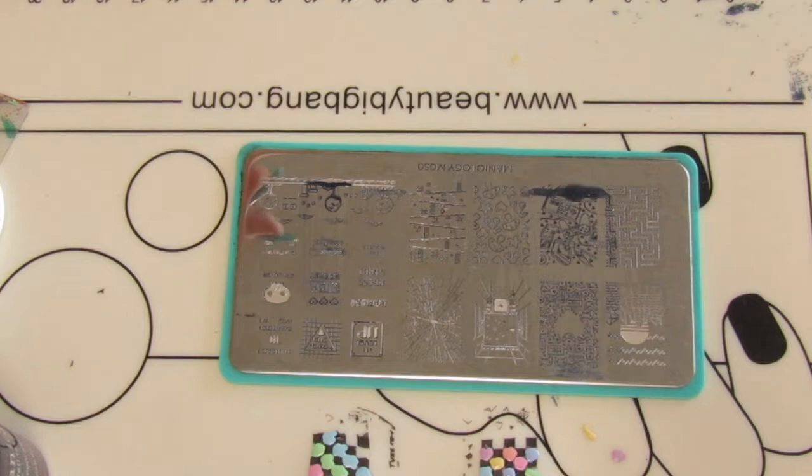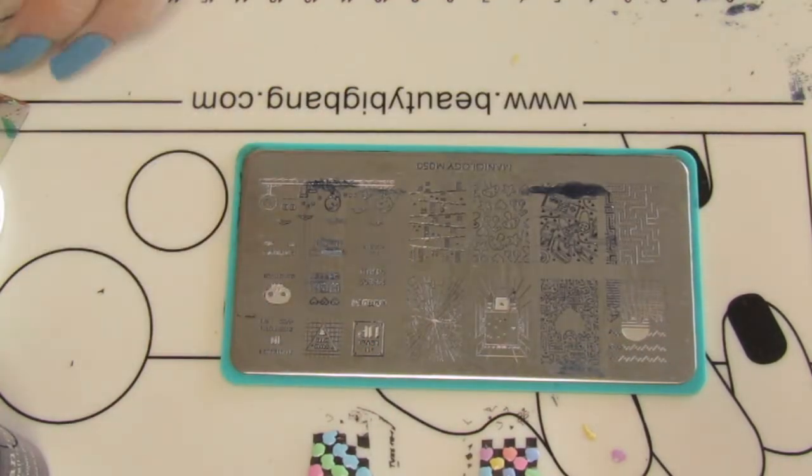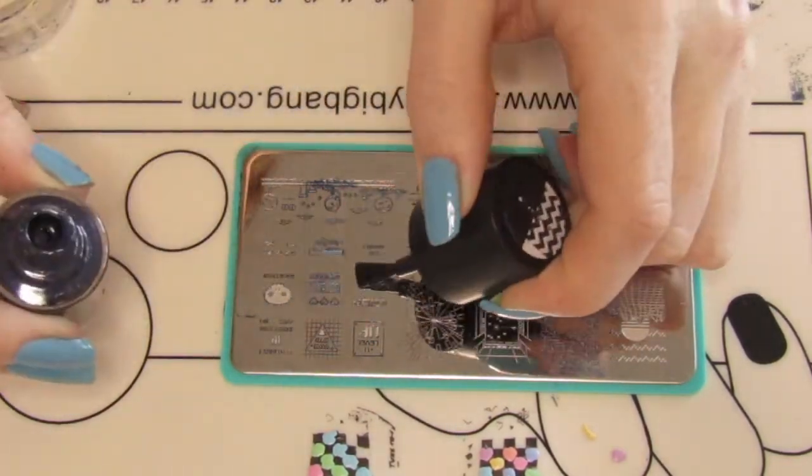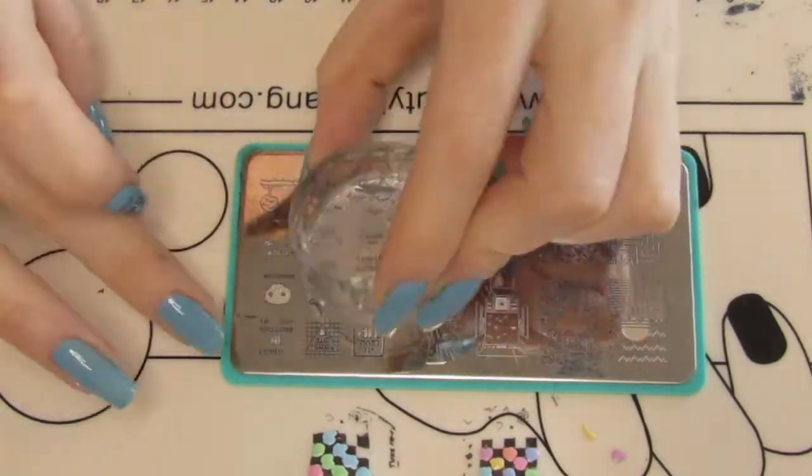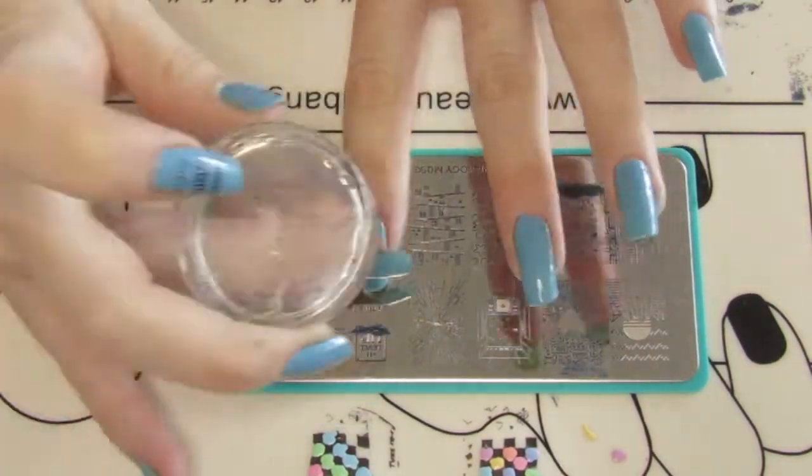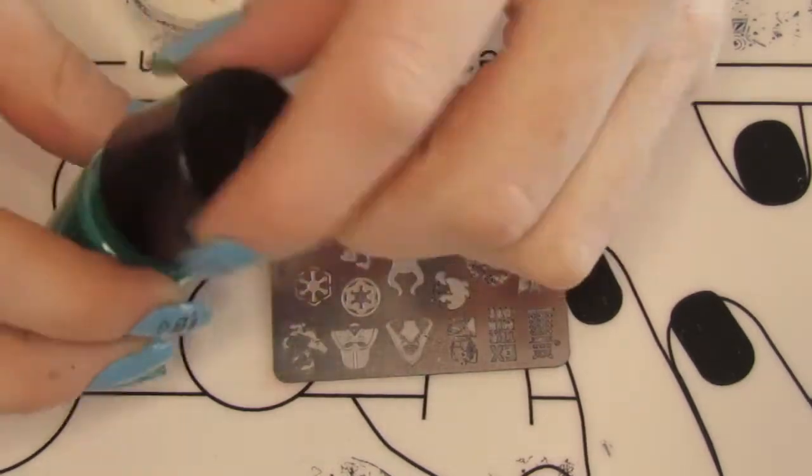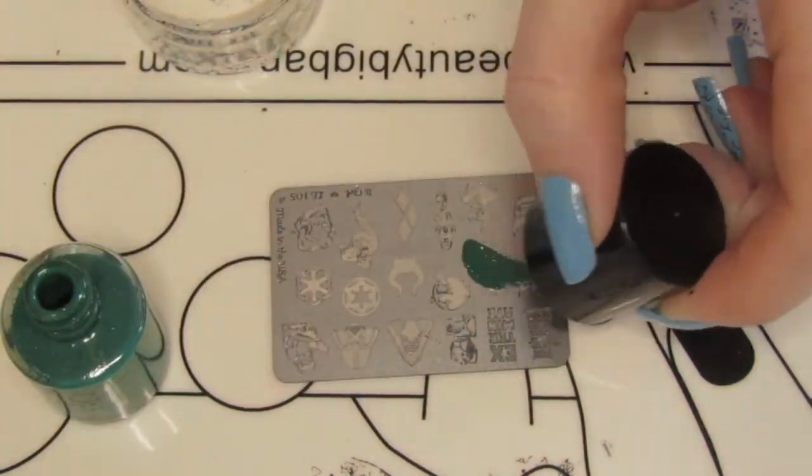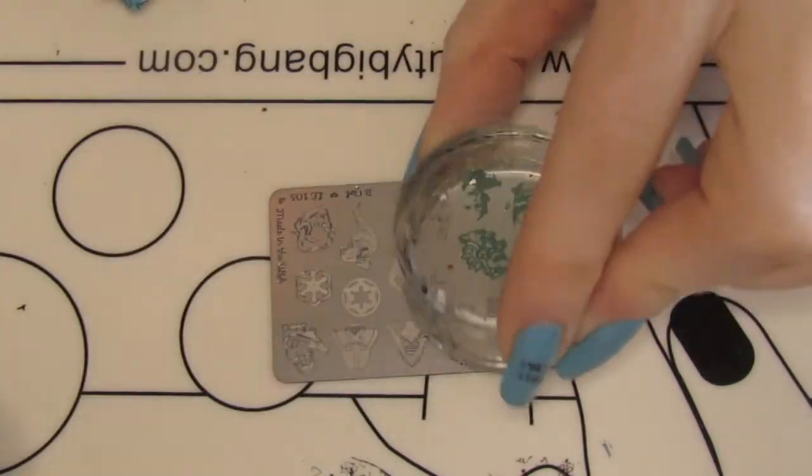For my other nails, I just stamped on various different images, including a couple of the monsters. I used the gaming plate from Manology, which is the one that was just up on screen, and also a plate by It Girl which I bought ages ago.